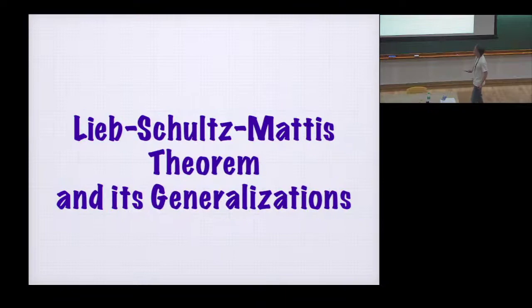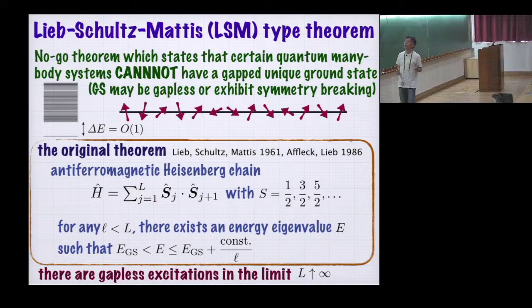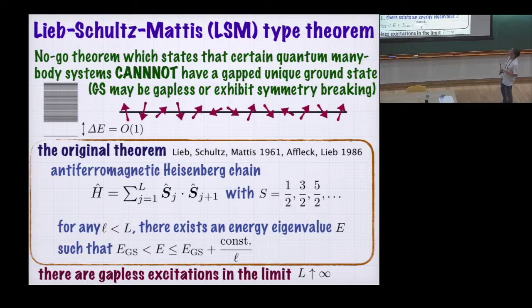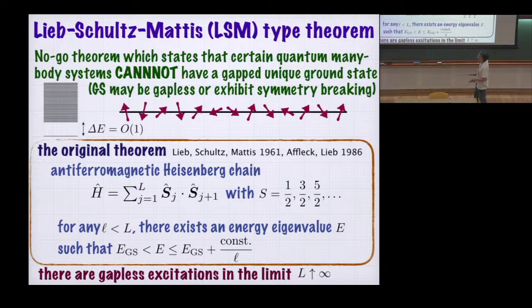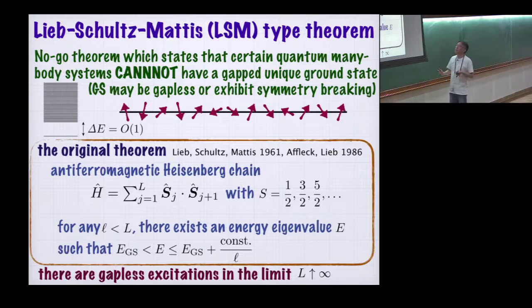Let me start with some introduction to this kind of statement. By a Leibschutz-Matthes type theorem, I mean a no-go theorem that says that certain quantum many-body systems cannot have a gapped unique ground state. The ground state is unique, and there is a gap with a bunch of excited states. This kind of theorem says that this situation cannot happen—ground state may be gapless or exhibit symmetry breaking, but there cannot be a unique gapped ground state.